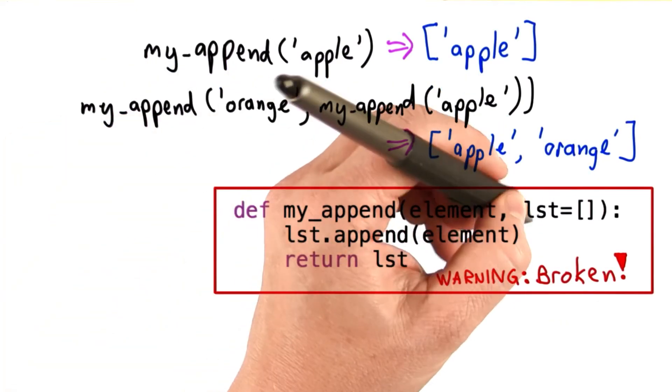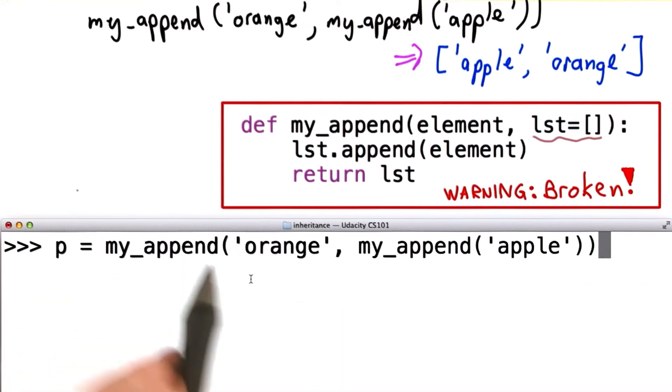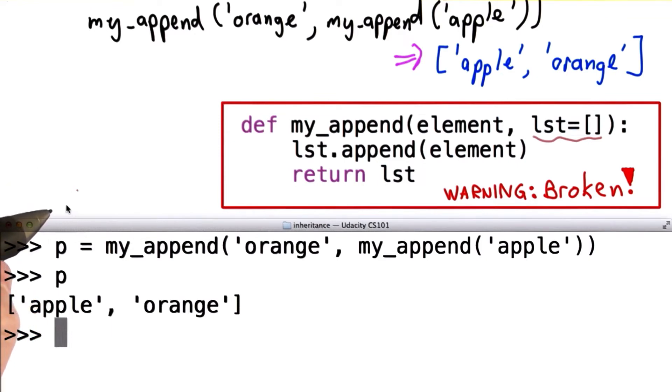So we could try to define my_append like this, using a default parameter. This seems to almost work, so here we'll call my_append as shown above, and we do indeed get the list apple orange as desired. But there's something really broken about this code, and I want to see if you can figure out what it is.